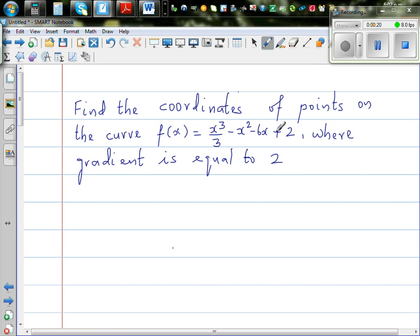So you want to find points, or the coordinate of the points, where the gradient is equal to 2. So let's write the function, f of x is equal to x cubed over 3, minus x squared minus 6x plus 2.